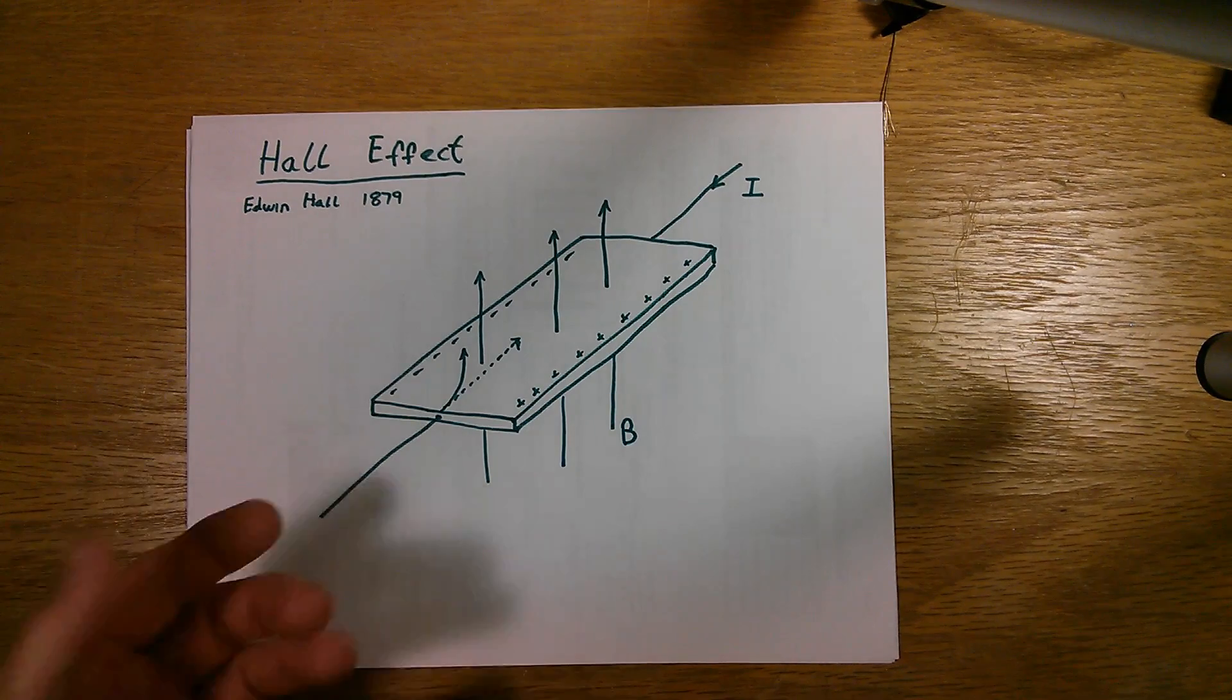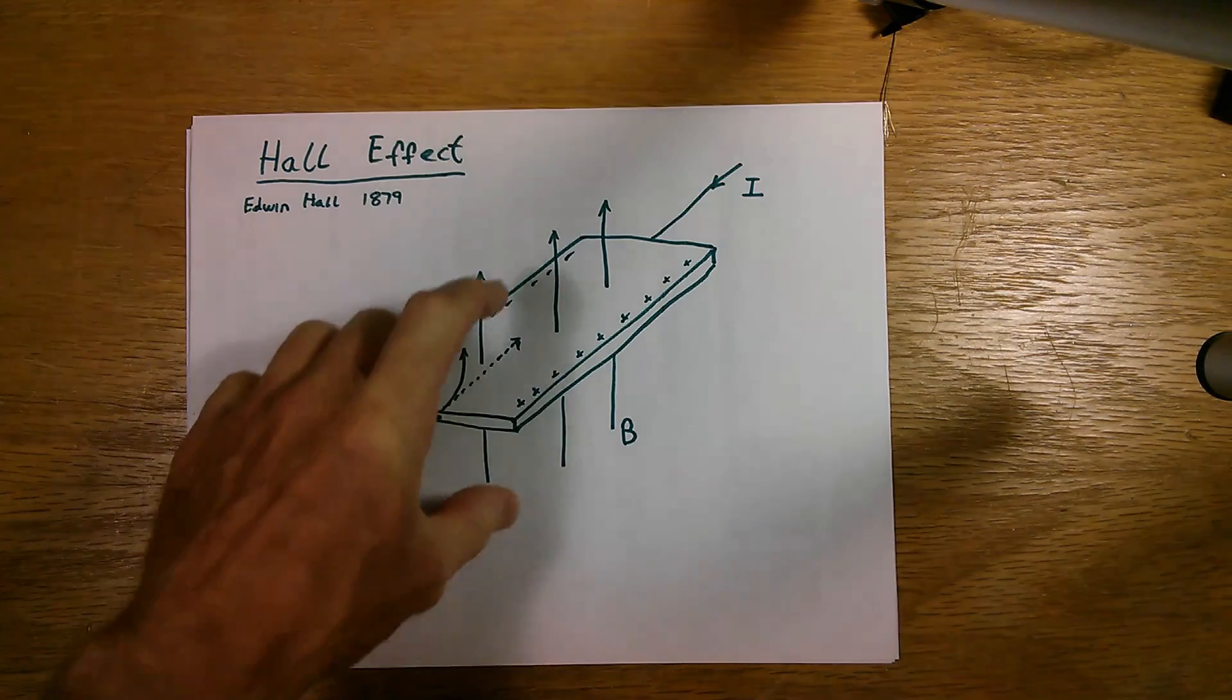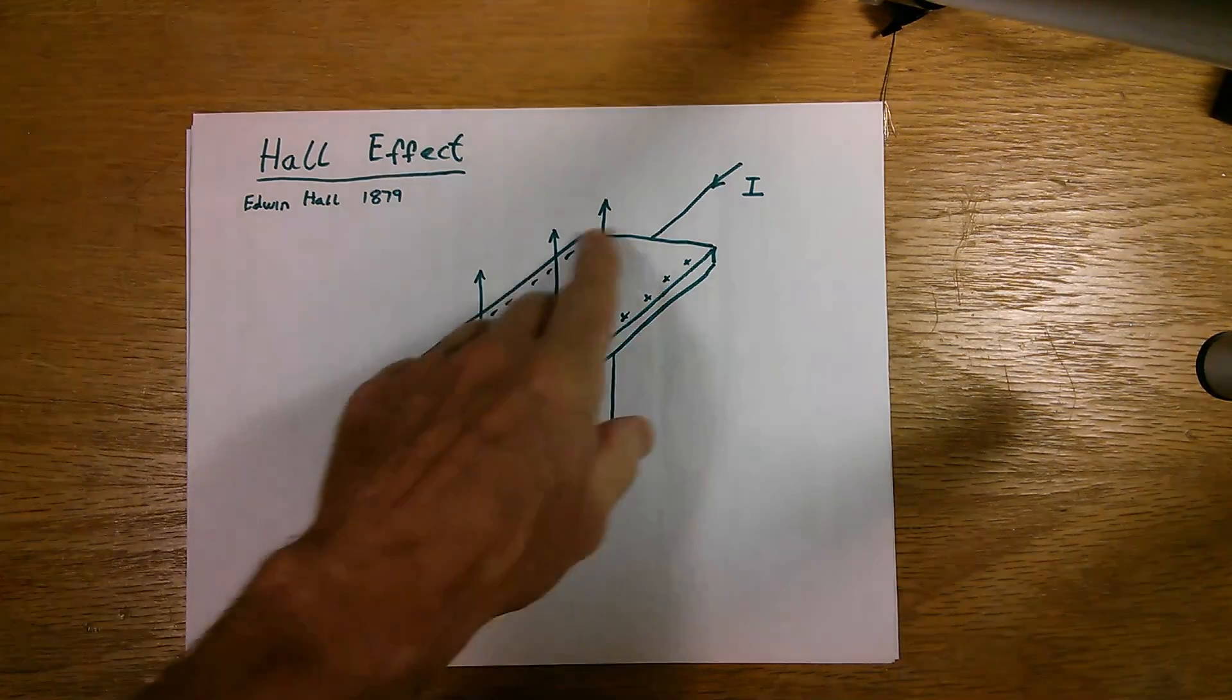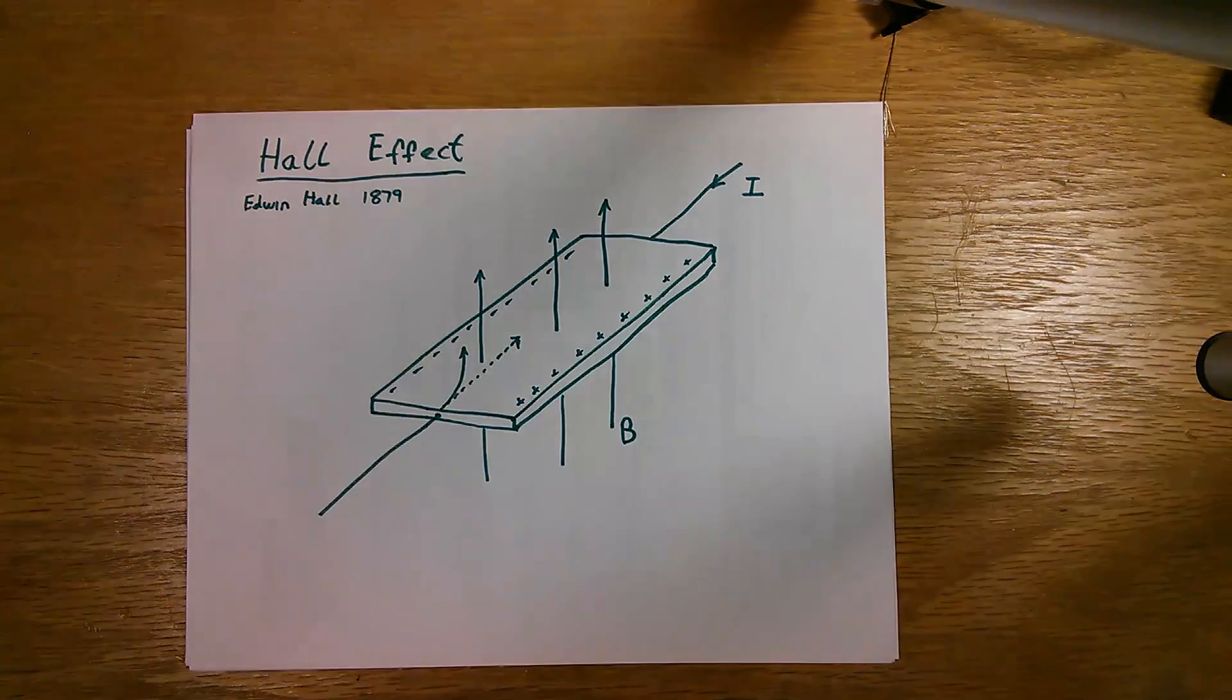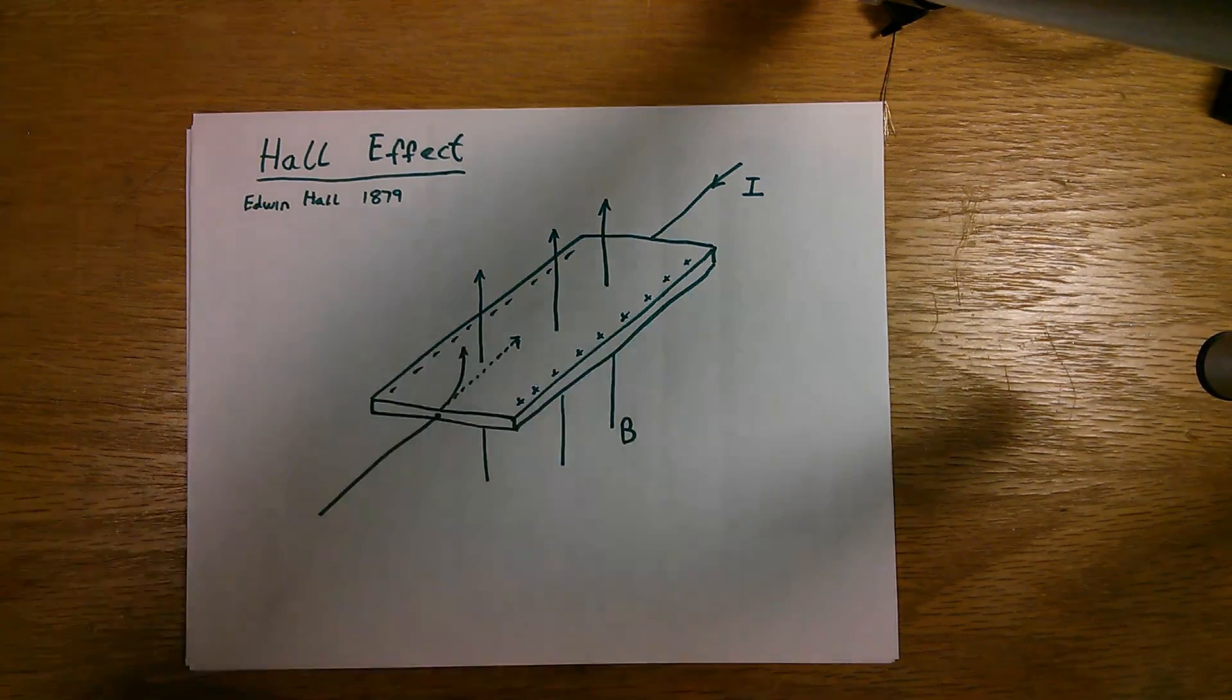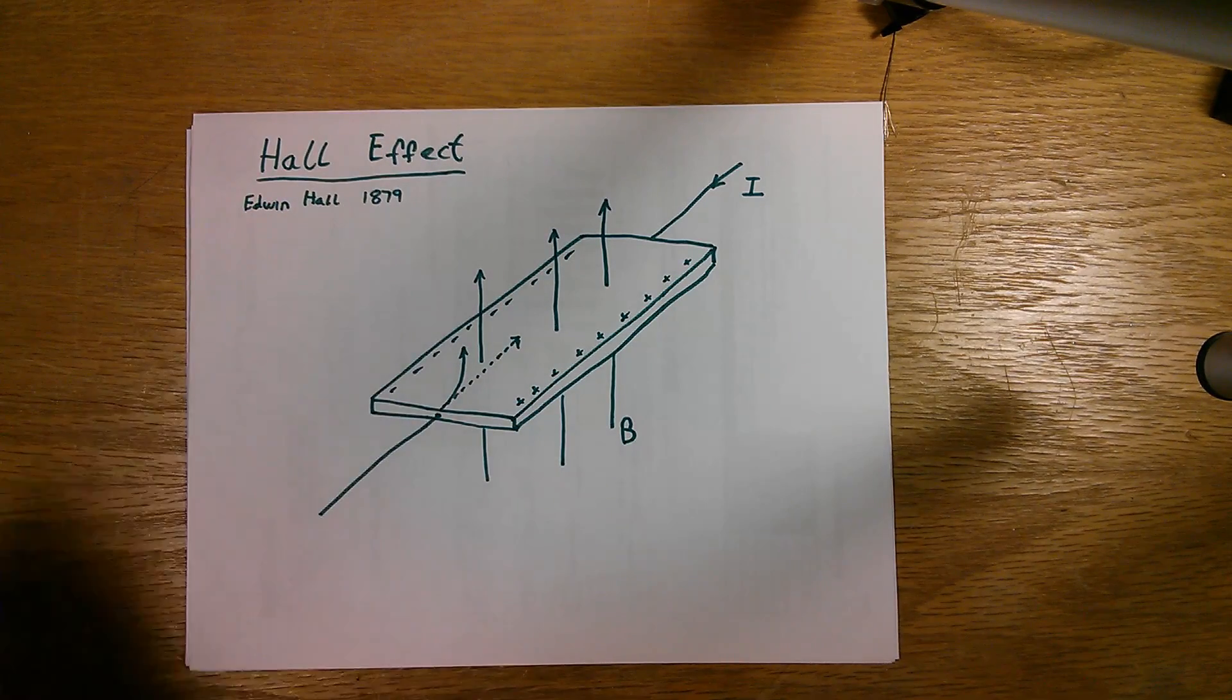The effect, how much deflection you get based on the amount of the magnetic field here, depends on the material that you're using as well. It just depends on the characteristics of the material. I won't go into any details on that; it's a bit complicated.